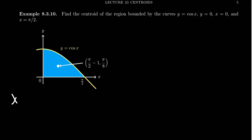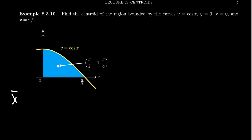To find this centroid, we first want to look for x-bar. Remember the formula we have: x-bar is equal to 1 over a times the integral from a to b of the function x times f of x dx. So let's first figure out the area.